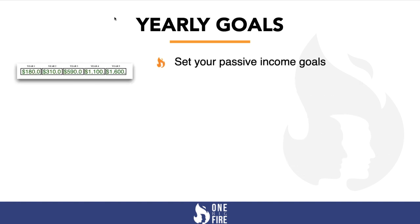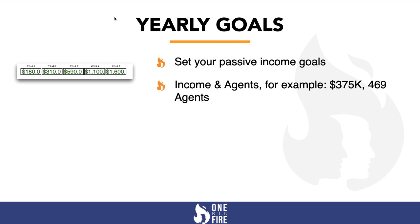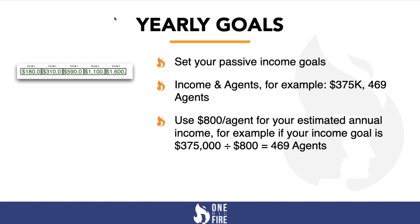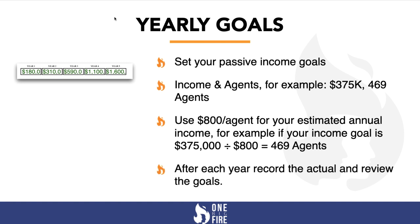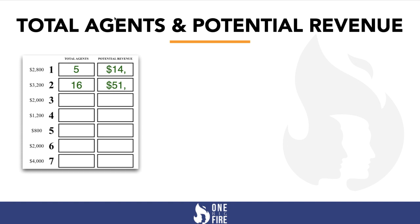In this section, you track your yearly goals. You set your passive income goals for income and agents. For example, if your income goal is $375,000, based on our assumptions that requires 469 agents in your rev share group. We use $800 per agent for your estimated annual income — so $375,000 divided by 800 gives you an agent count of 469. After each year, record the actual results and review your goals.